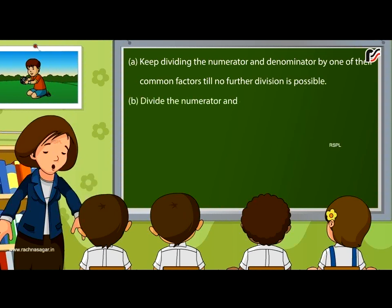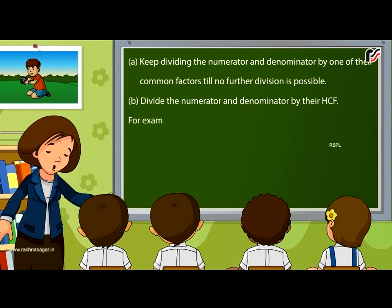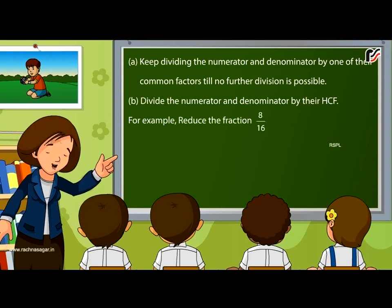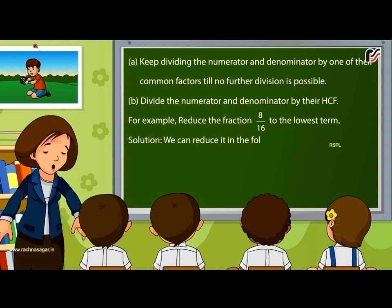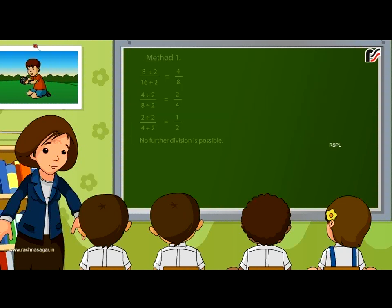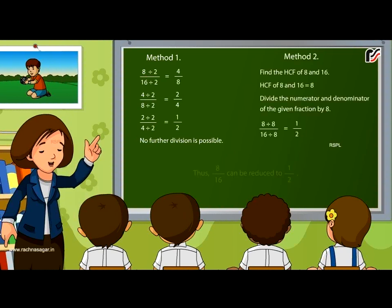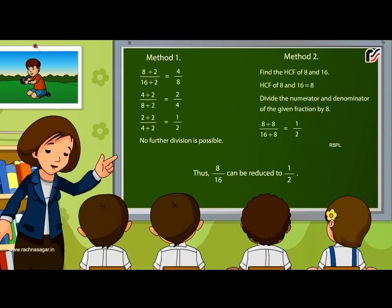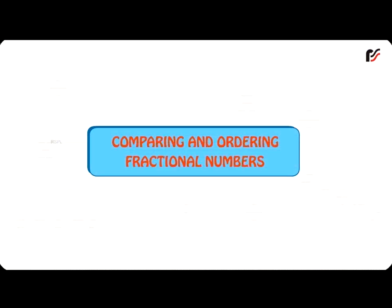Divide the numerator and denominator by the HCF. For example, reduce the fraction 8 by 16 to the lowest term. Solution: we can reduce it using two methods. Thus, 8 by 16 can be reduced to 1 by 2.